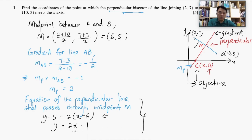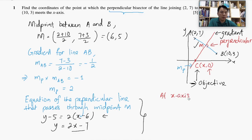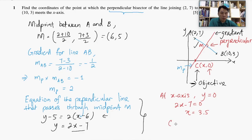And then finally, we make use of this result to find where this perpendicular line cuts the x-axis. At the x-axis, the y-coordinate is equal to 0. So we let y = 0, which gives us x = 3.5. We've managed to find where this perpendicular line meets the x-axis — point C has coordinates (3.5, 0).